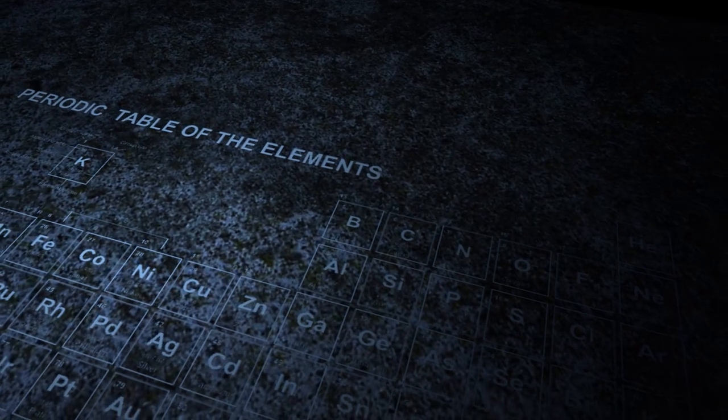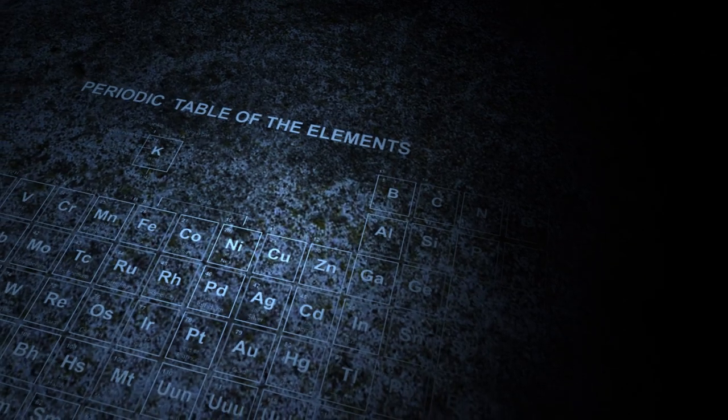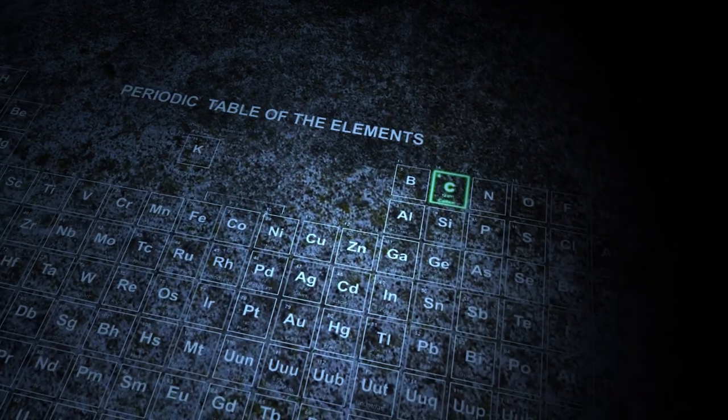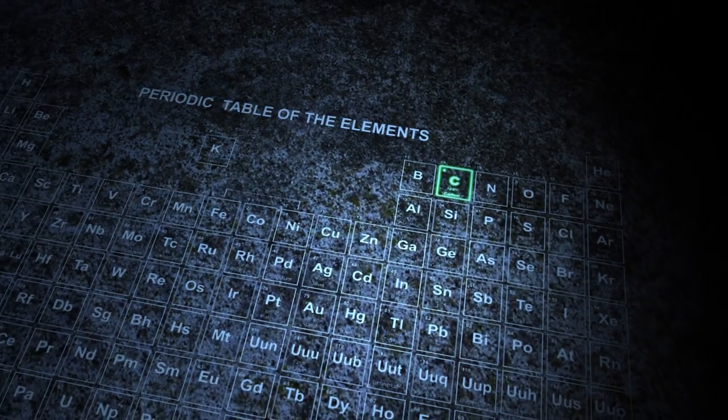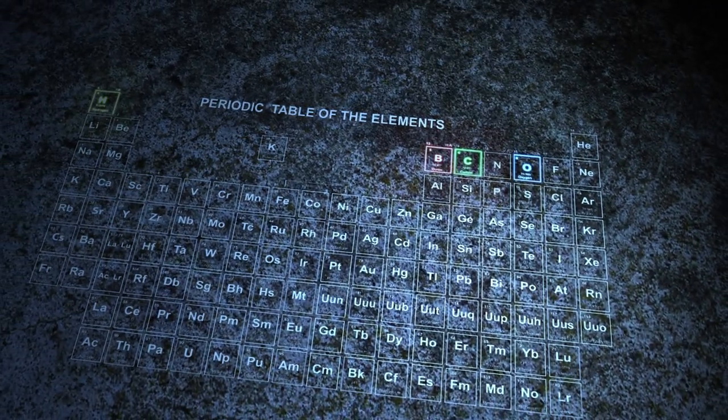Now that we've learned a little bit more about polymers, the second part is organic. Organic in this context doesn't mean grown without pesticides. Instead, in chemistry, organic means that the polymer contains carbon. The periodic table of the elements lists all of the elements that are known to man. The polymers I make contain carbon, which makes them organic, and they also contain oxygen, hydrogen, and sometimes boron.